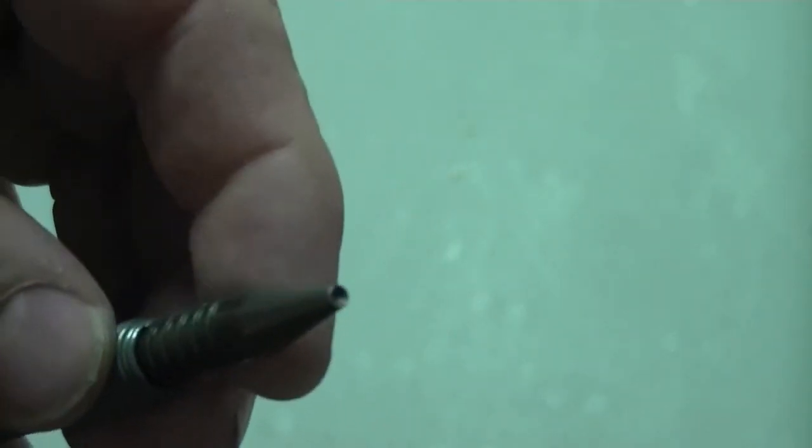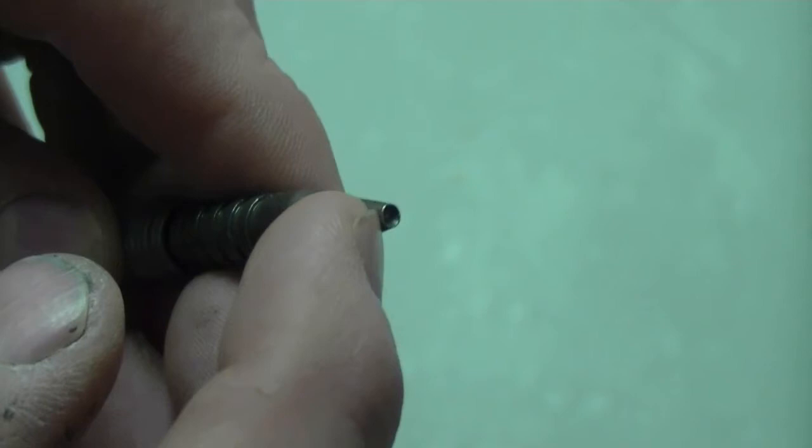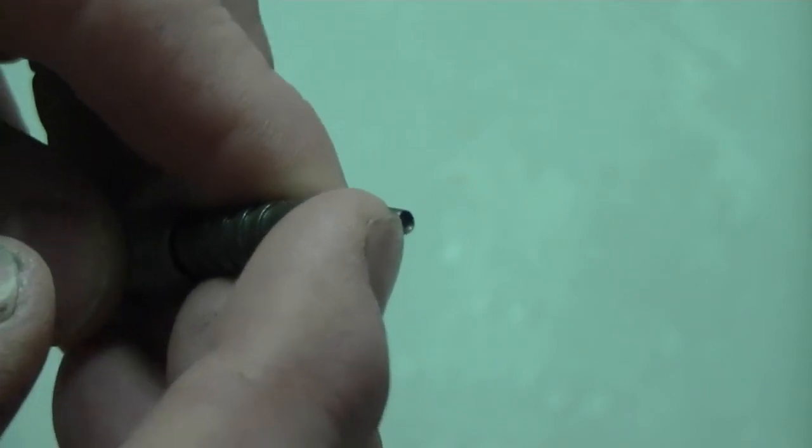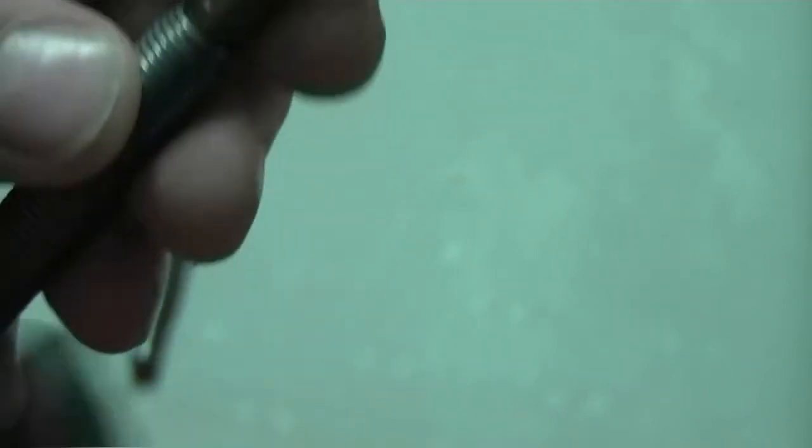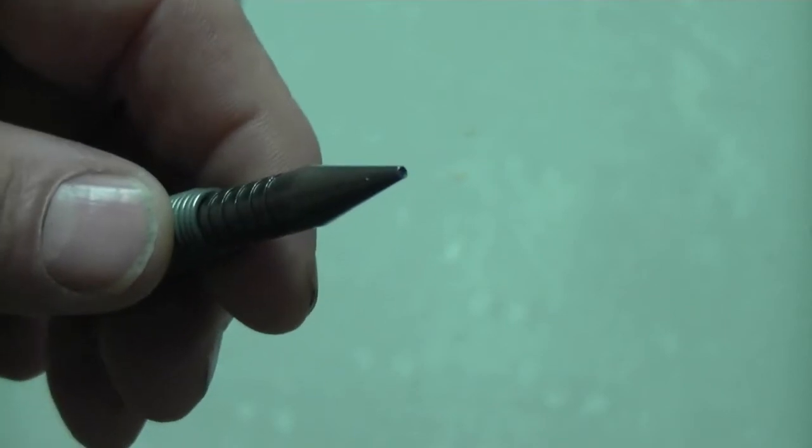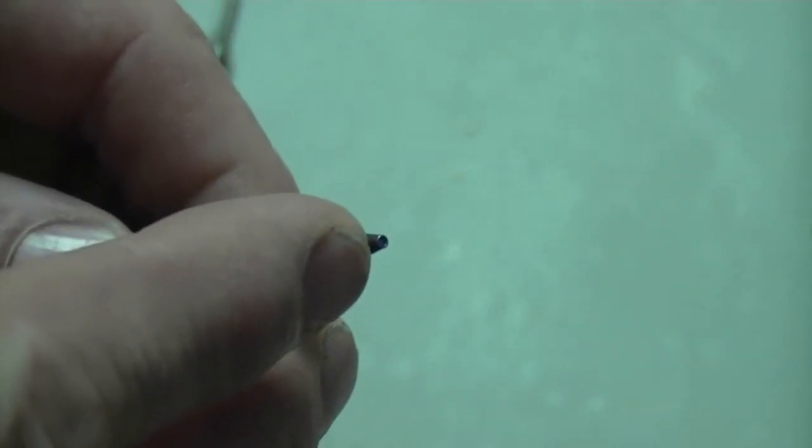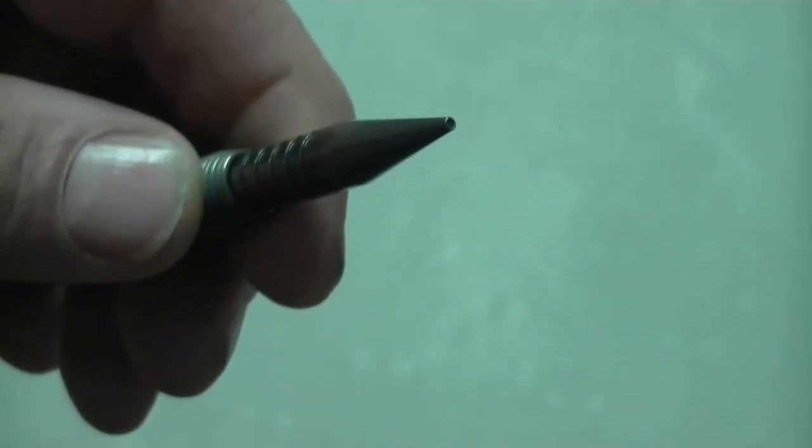And with the nail set you have the broader tip at the end of the set for a bigger nail. At the other end you have a finer tip on the nail set for finished nails.